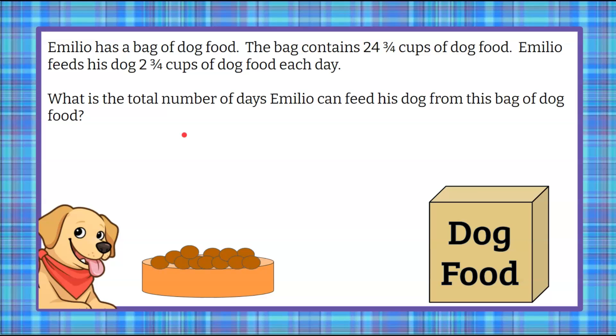Welcome back. We're going to understand that we have 24 and 3/4 cups of dog food. Our bag of dog food has 24 and 3/4 cups. Emilio has determined he's going to feed his dog 2 and 3/4 cups of dog food each day. So each day in the dog dish goes 2 and 3/4 cups. We're going to find out what is the total number of days that Emilio can feed his dog from this bag of dog food using this quantity per day.